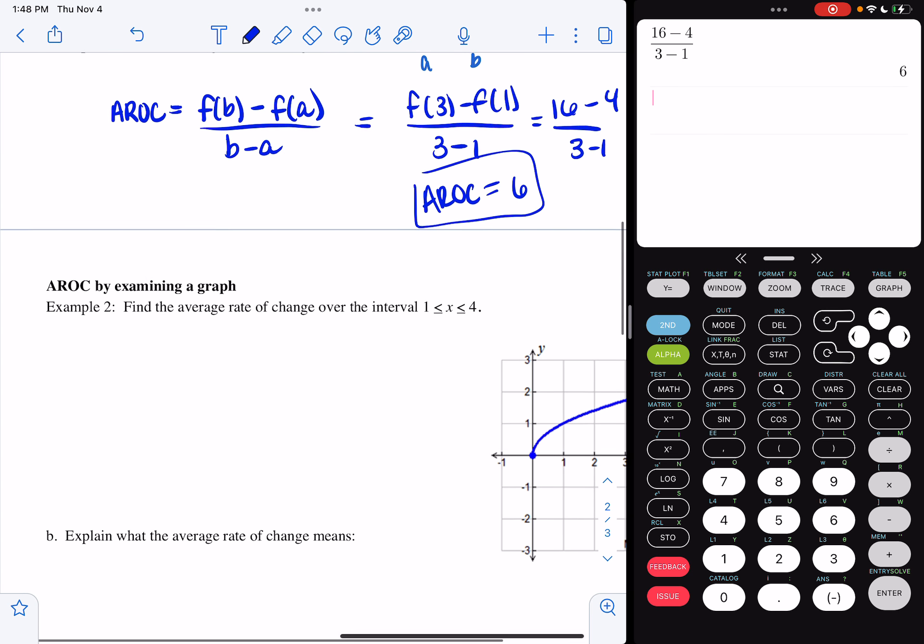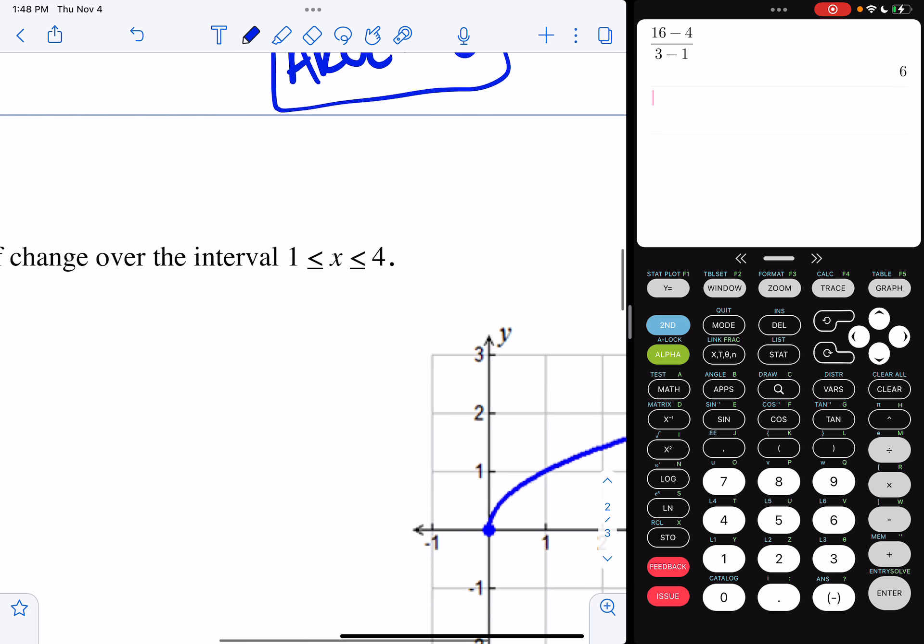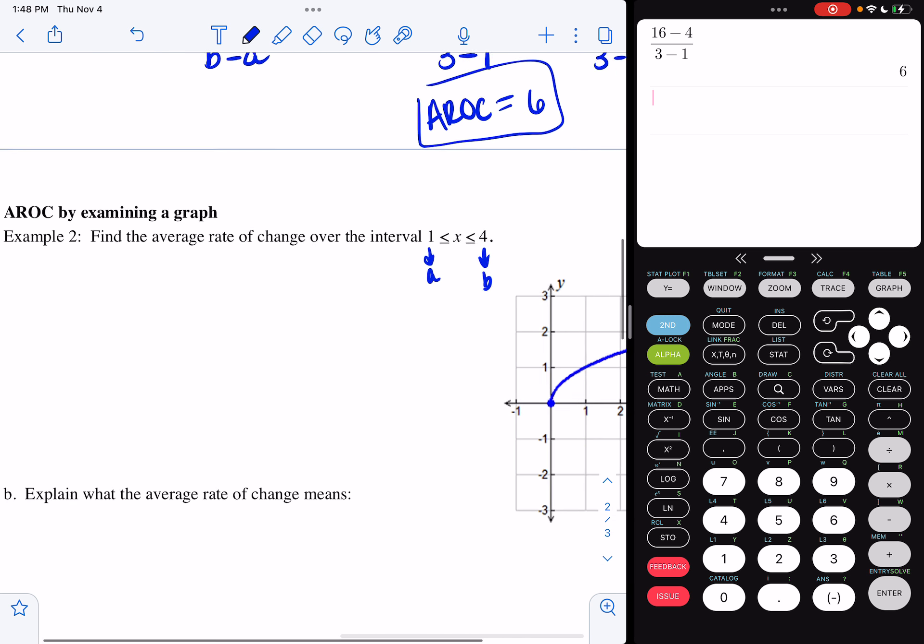Number 2, AROC by examining a graph. Find the average rate of change over the interval 1 less than or equal to x less than or equal to 4. So if I think about it, this is my a value and this is my b value. So I'm going to set up my AROC formula.